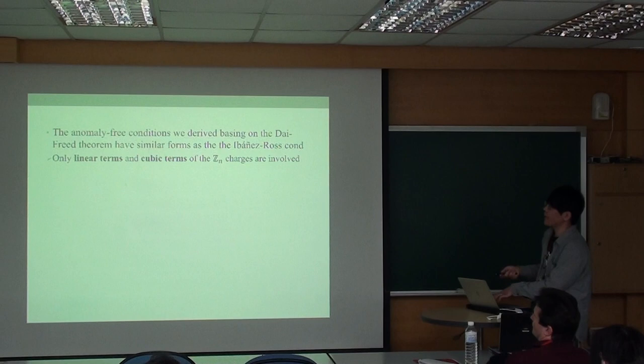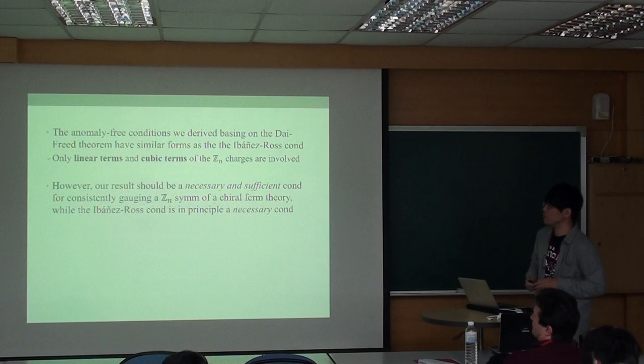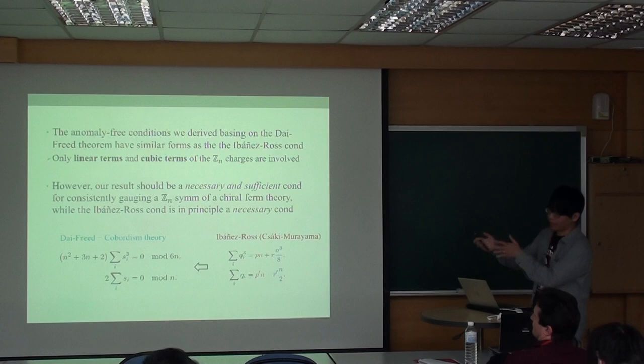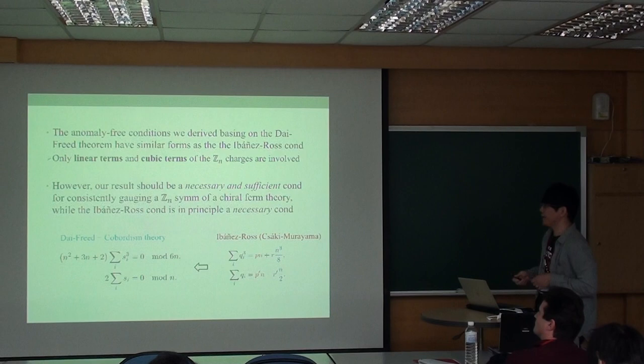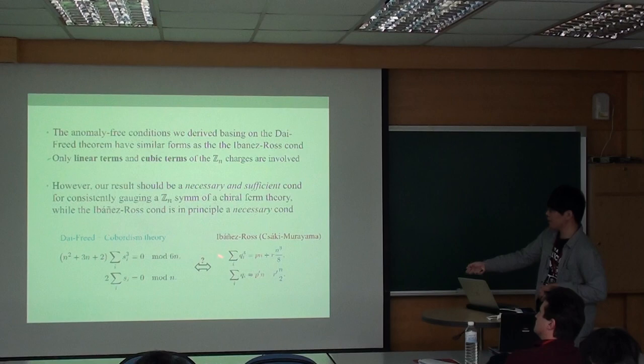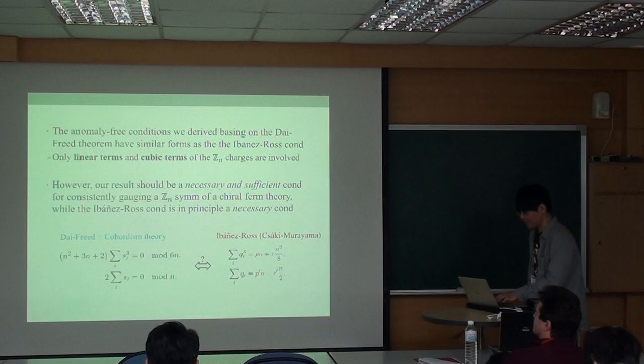The N equals 3 condition I derive based on the Dai-Freed theorem has similar forms as the Ibáñez-Ross condition. That is, only linear terms and cubic terms are involved. However, our result should be a necessary and sufficient condition for consistent gauge and ZN symmetry, while the Ibáñez-Ross condition is in principle a necessary condition. Ibáñez-Ross condition is a necessary condition for an anomaly-free theory that comes from a UV U(1) gauge symmetry that spontaneously breaks to ZN at IR. Maybe it's still an interesting question if these two anomaly-free conditions are equal to each other. At least by some numerical check I can show they are indeed identical.